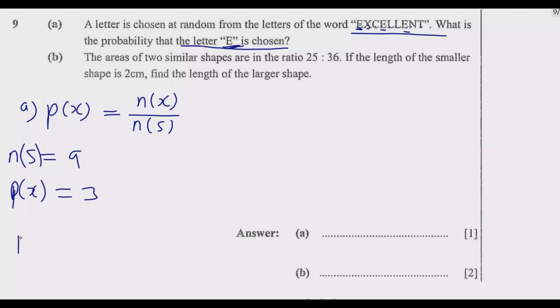What's the probability? The probability of choosing letter E is equal to 3 over 9, which is equal to 1 over 3 when you simplify. So the probability of choosing letter E from the word EXCELLENT is 1 out of 3.